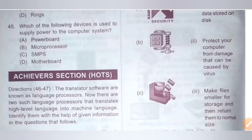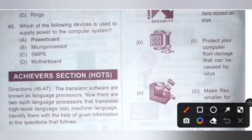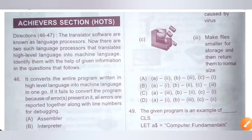Question 45: Which of the following devices is used to supply power to the computer system? Options: A. Power board, B. Microprocessor, C. SMPS, D. Motherboard. SMPS stands for Switched Mode Power Supply — it is an electronic circuit that converts power using switching devices that are turned on and off at high frequencies. Option C is the correct answer.